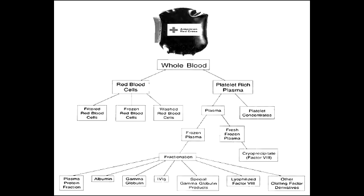What blood product would you administer in case of disseminated intravascular coagulation, cirrhosis, or warfarin overdose? In these conditions, you would provide fresh frozen plasma. Giving fresh frozen plasma will increase the coagulation factor levels.